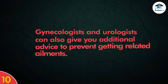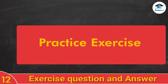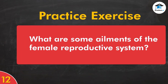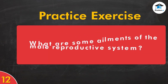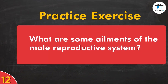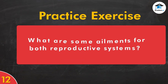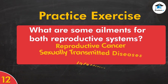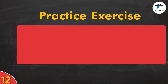Practice exercise. Question 1: What are some ailments of the female reproductive system? Answer: Dysmenorrhea or menstrual cramps, and vulvovaginitis. Question 2: What are some ailments of the male reproductive system? Answer: Prostatitis and balanitis. Question 3: What are some ailments for both reproductive systems? Answer: Reproductive cancer, sexually transmitted diseases, and infertility.